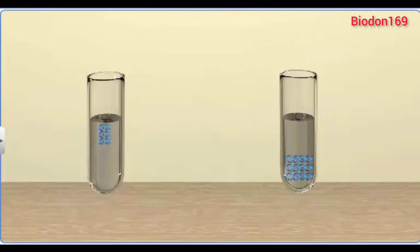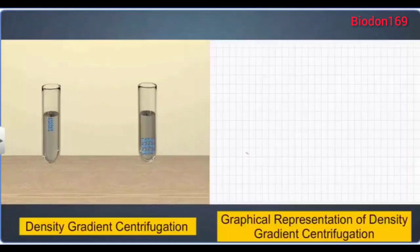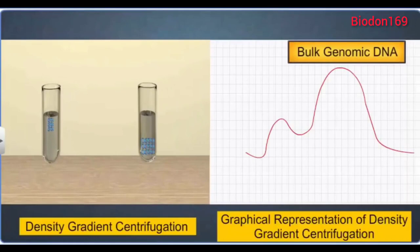Graphical representation shows bulk genomic DNA as a major peak, and repetitive DNA as smaller peaks, known as satellite DNA.